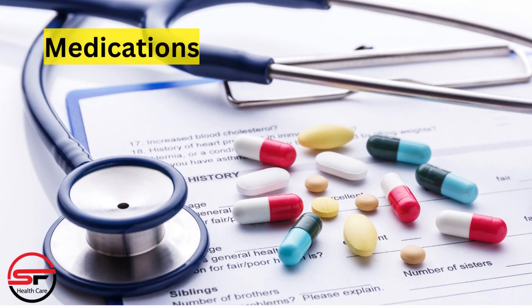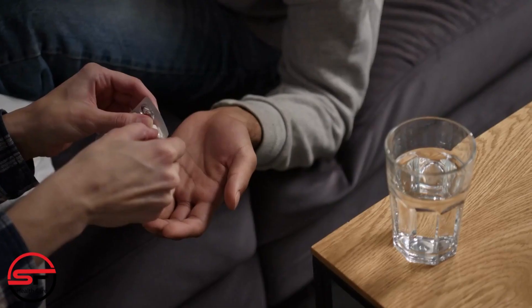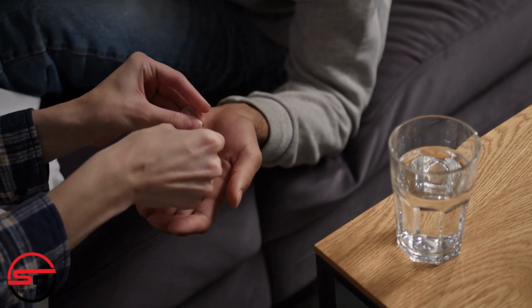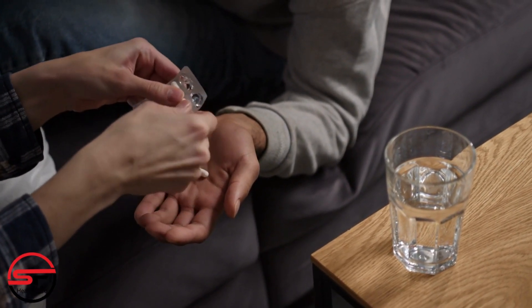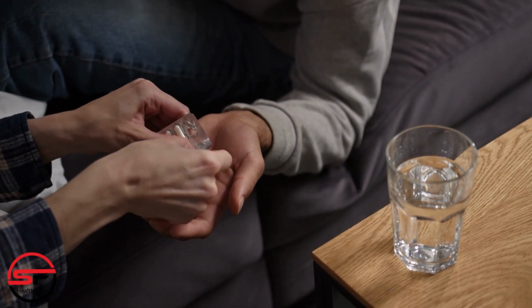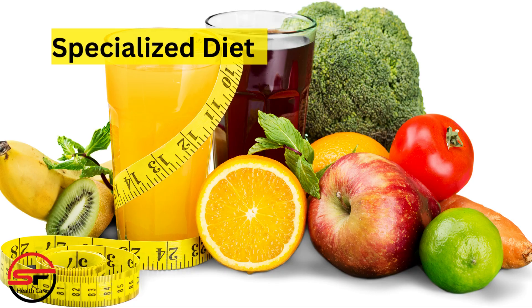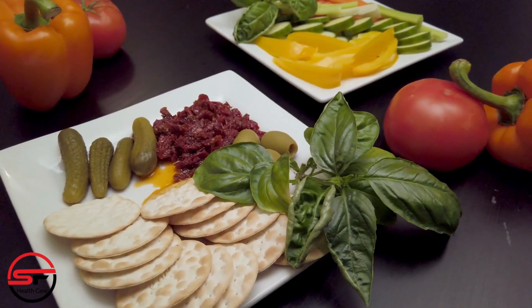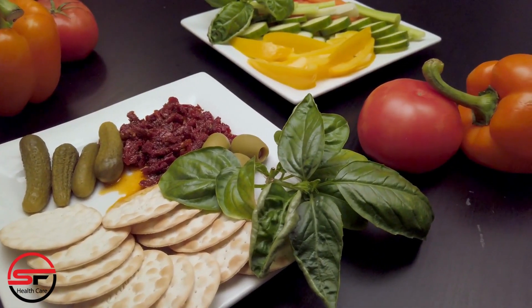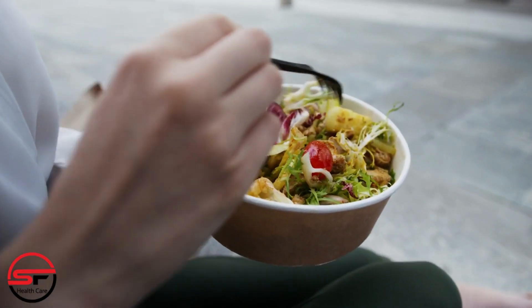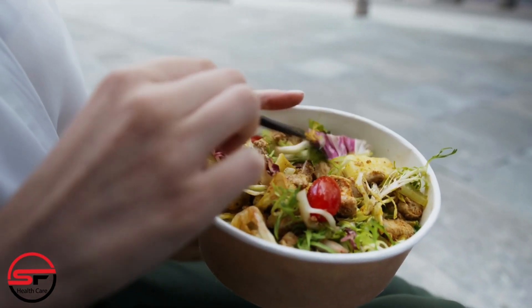Medications: in some cases, medications might be prescribed. These medications can help manage underlying conditions such as diabetes, high cholesterol, or obesity, which often contribute to fatty liver disease. Medications can also help reduce inflammation in the liver. Specialized diets: certain specialized diets, such as the Mediterranean or low glycemic index diet, have shown promise in managing fatty liver disease. These diets focus on whole foods, healthy fats, and lean proteins, providing the nutrients needed for liver health.